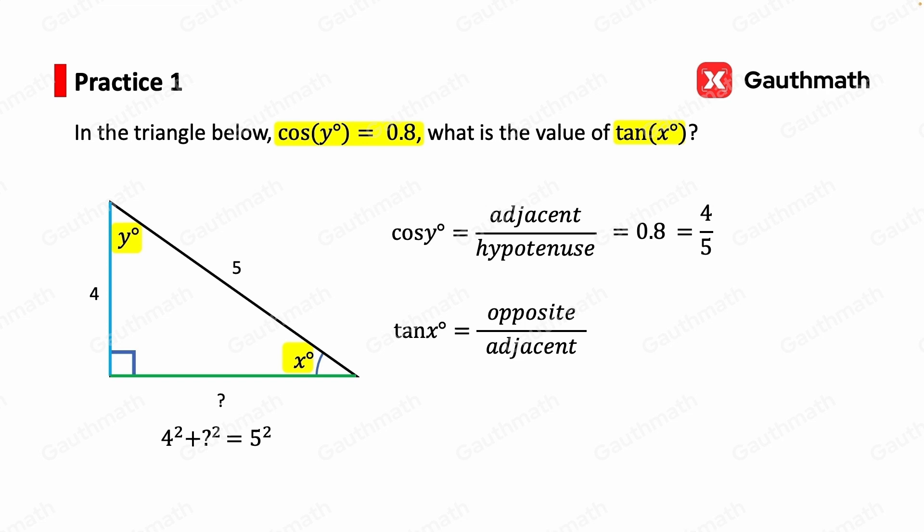Using some basic algebra, we can find that the missing side is equal to 3. So tangent x is equal to 4 over 3.